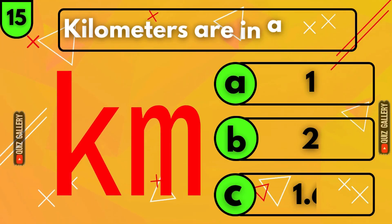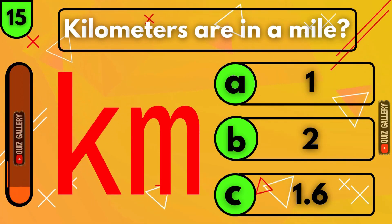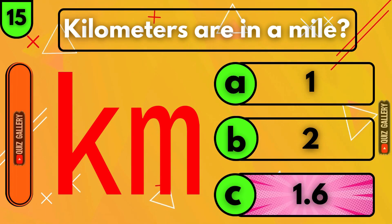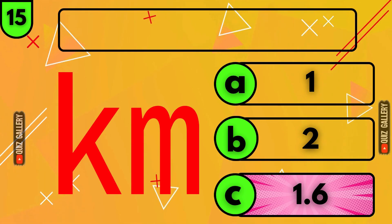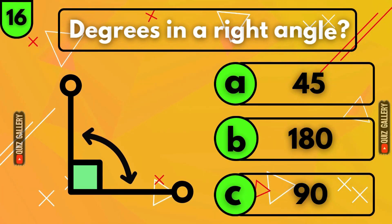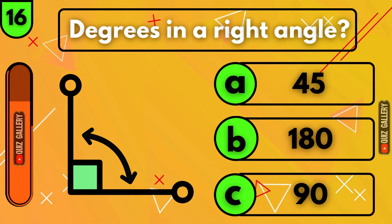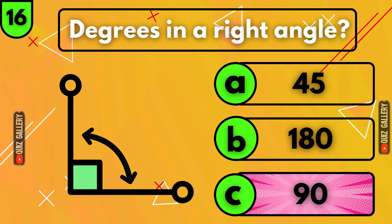How many kilometers are in a mile? One point six kilometers! How many degrees are in a right angle? Ninety degrees!